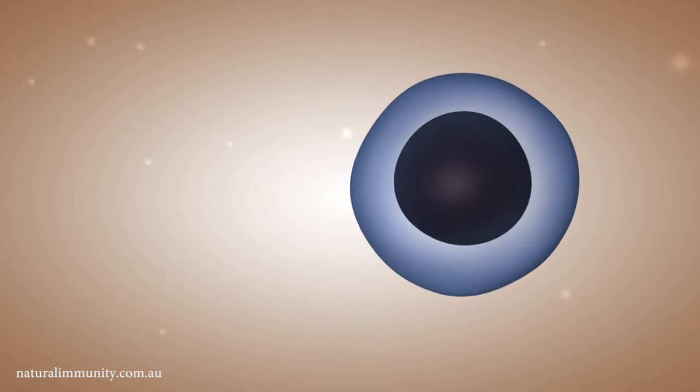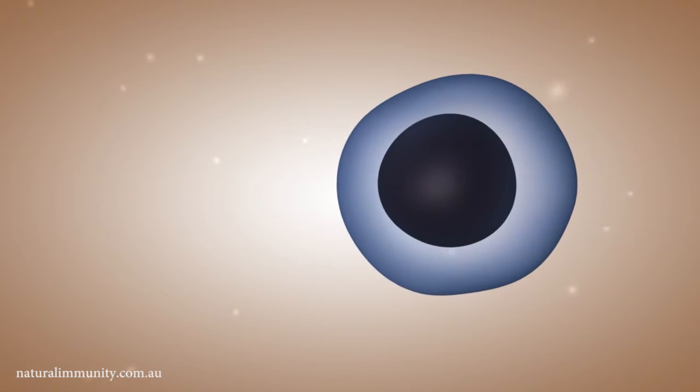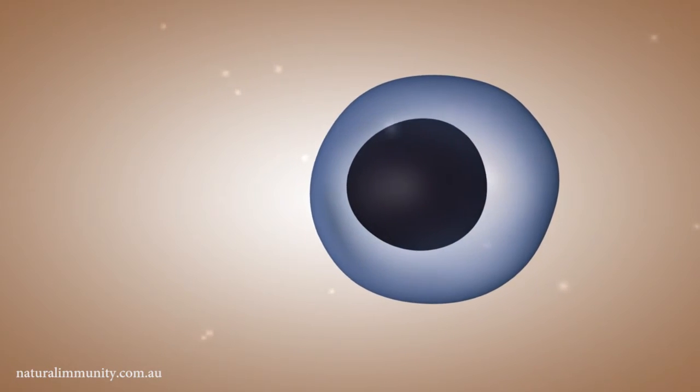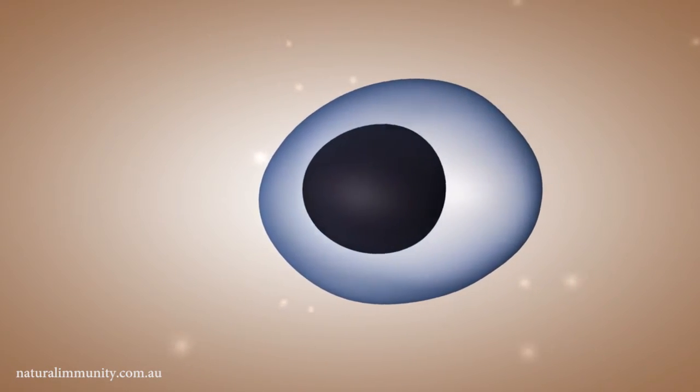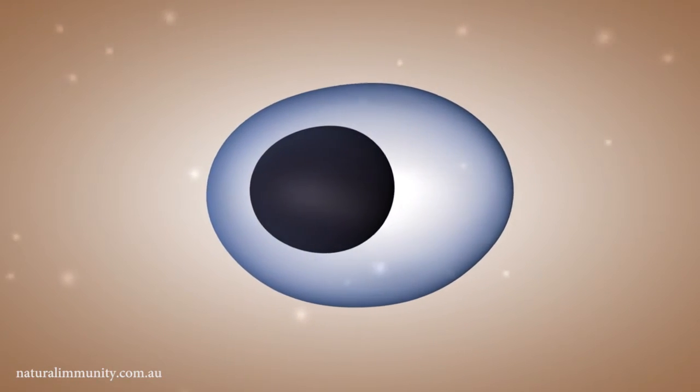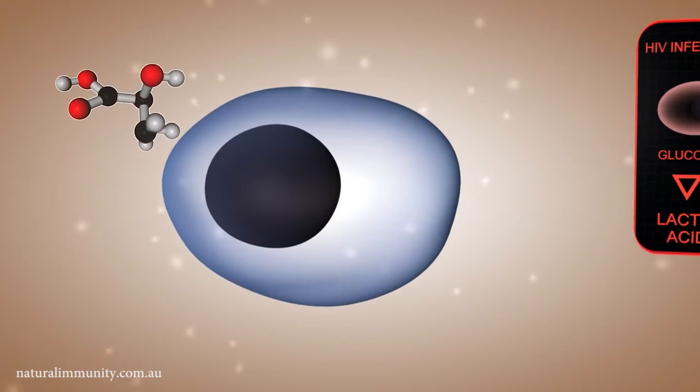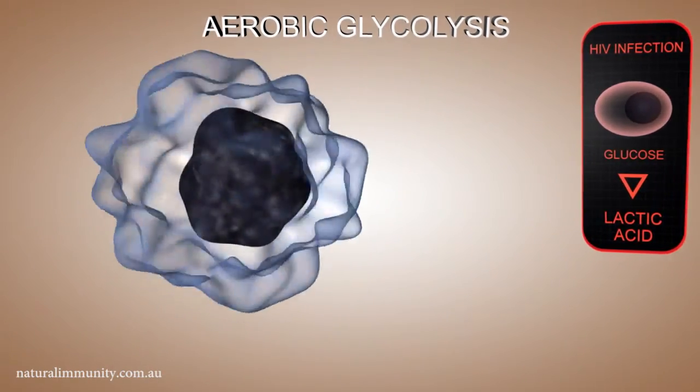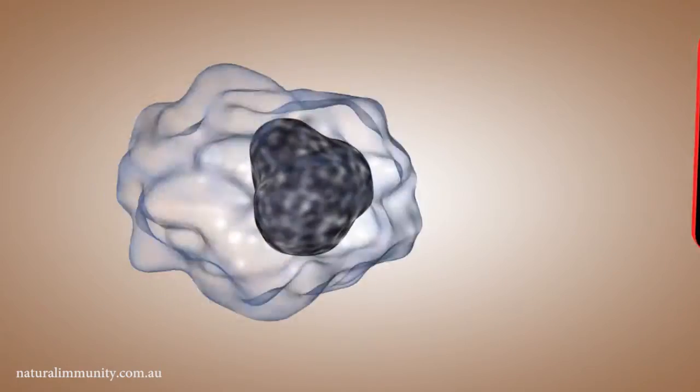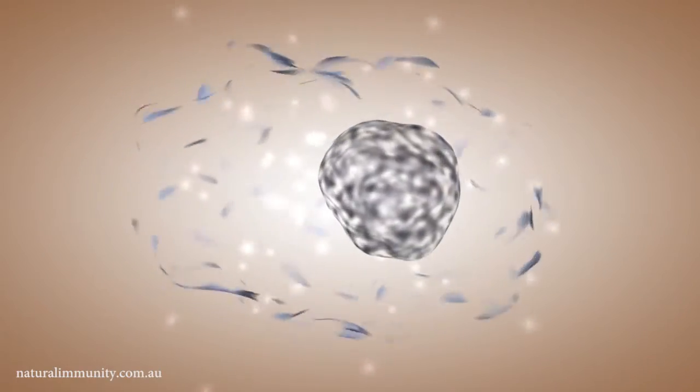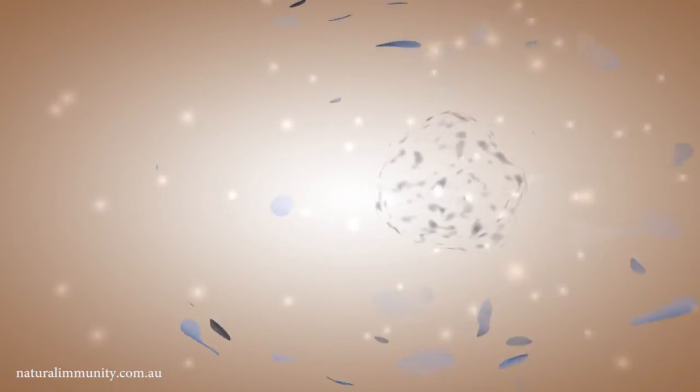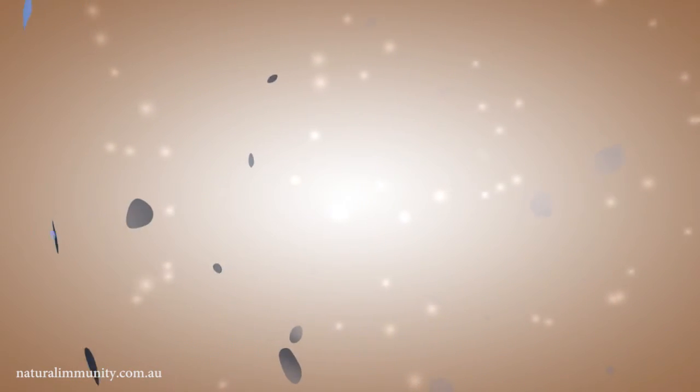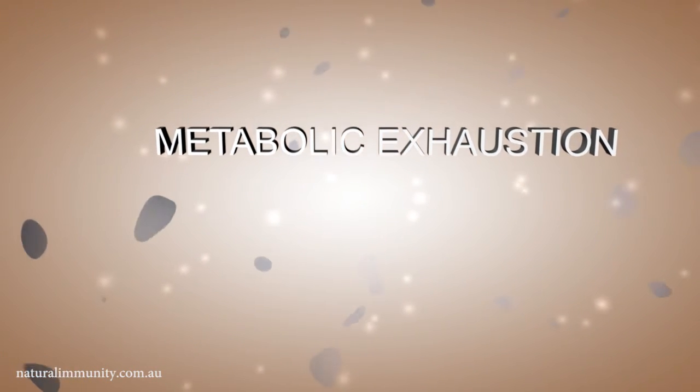In this activated state, instead of breaking down glucose to form energy pockets, ATP, glucose is broken down into a substance called lactic acid through a process called aerobic glycolysis. Glycolysis is only moderately efficient in energy production and as a result, the CD4 T-Cells die of exhaustion. The researchers called this process metabolic exhaustion.